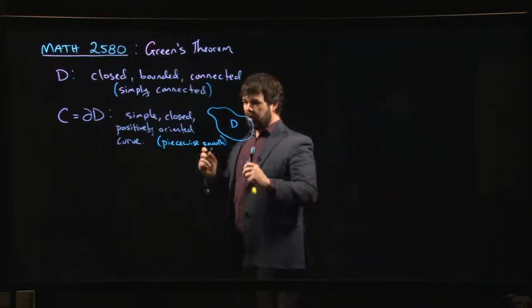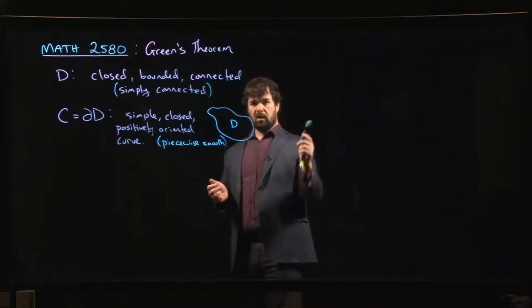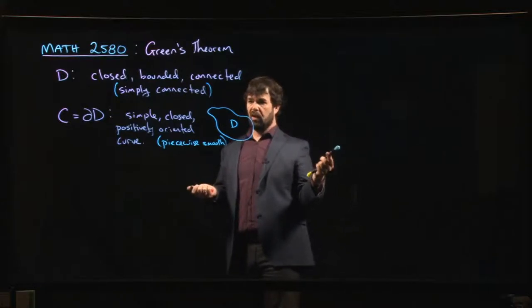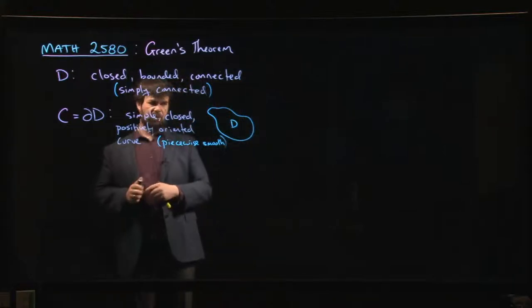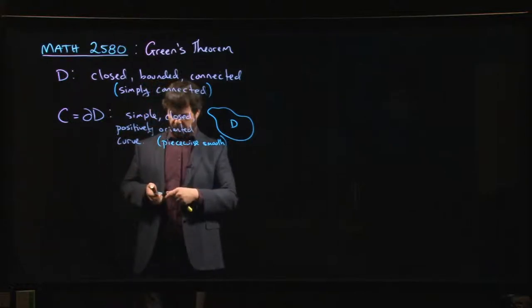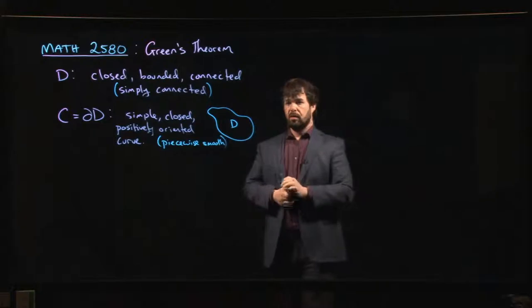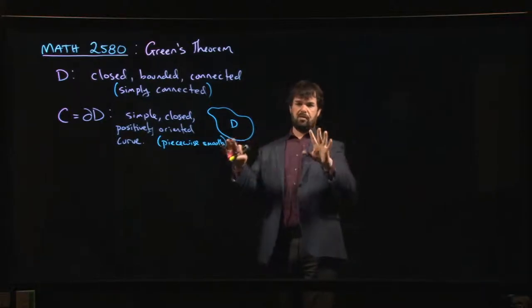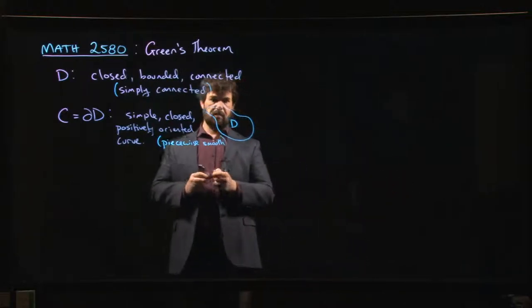It should consist of at worst some finite number of smooth components that make up the curve. We don't want to insist on smooth because we want to be able to integrate over regions like triangles and rectangles that have corners. We want to allow for corners, but we don't want fractal boundaries. This is the context in which we have Green's theorem.